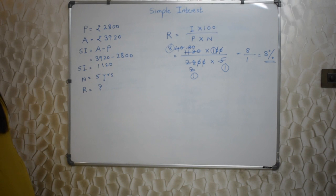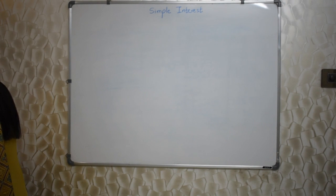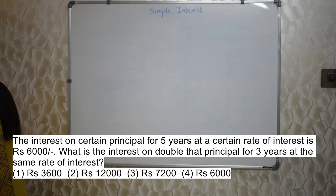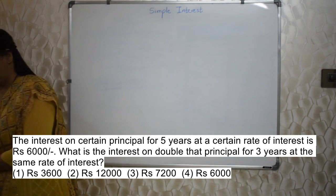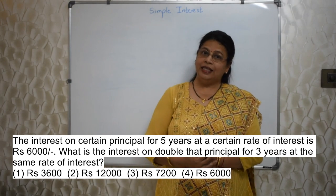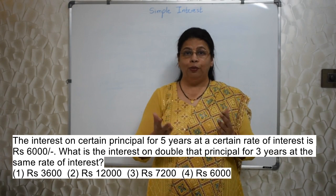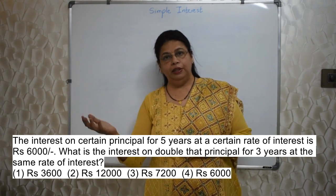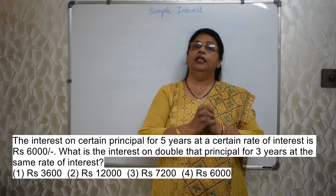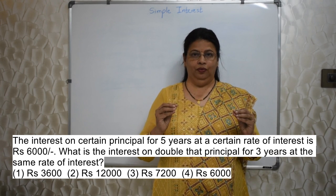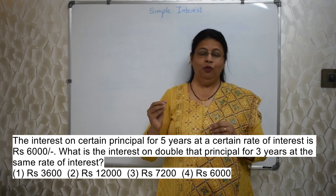Next sum: The interest on a certain principal for 5 years at a certain rate of interest is ₹6,000. What is the interest on double that principal for 3 years at the same rate of interest? In these kinds of sums where there is no proper information given — uncertain principal, double the principal — very often it is not based on the formula. It is simple unitary method.